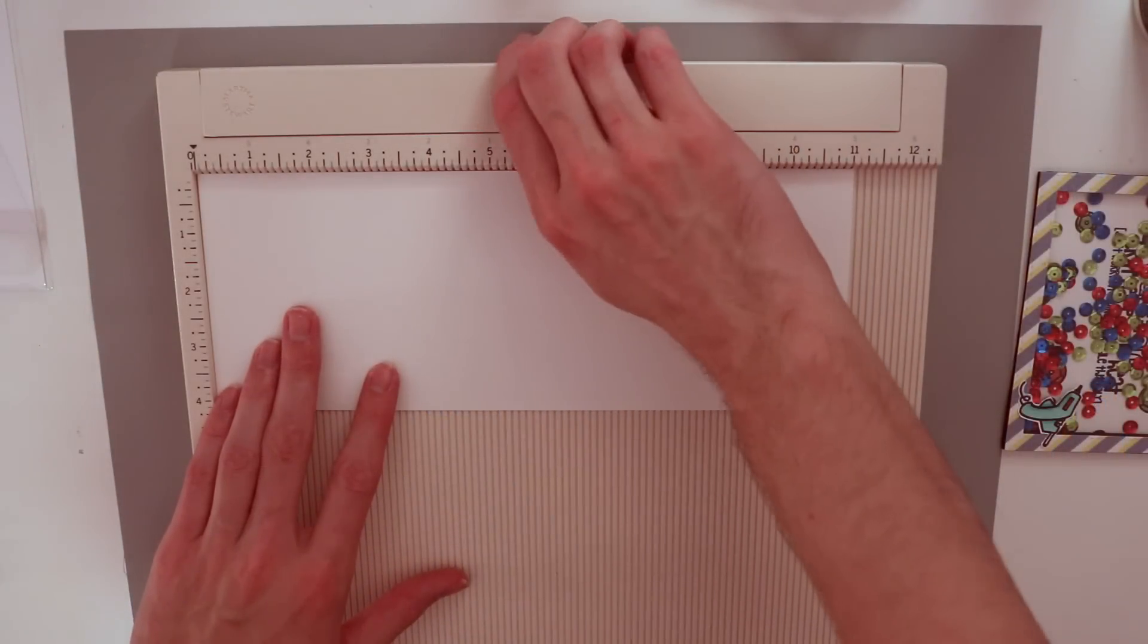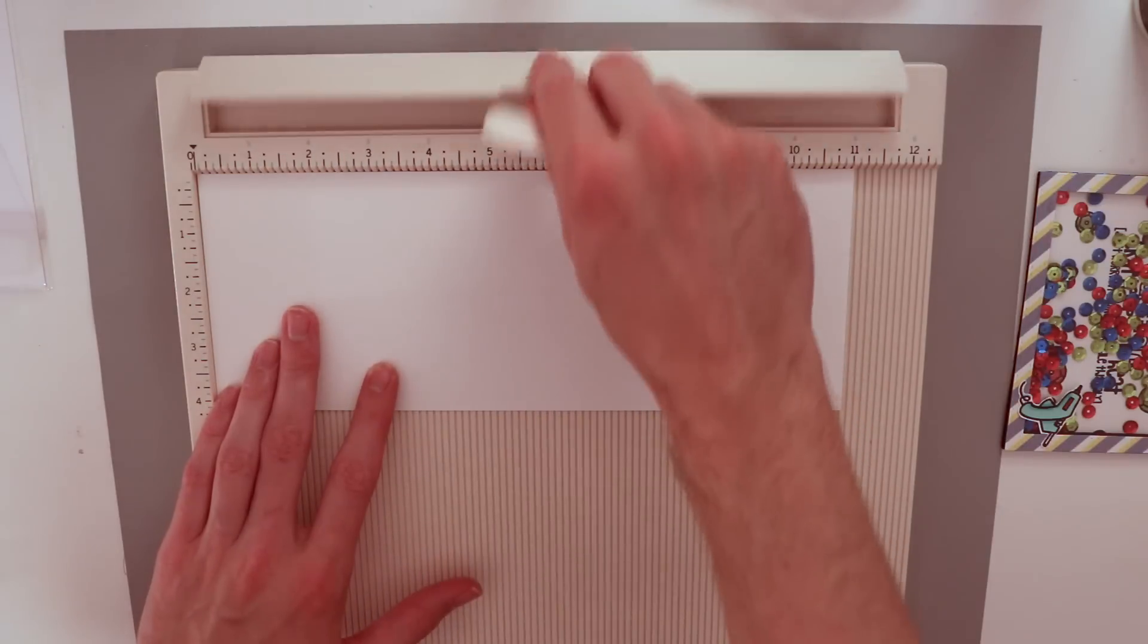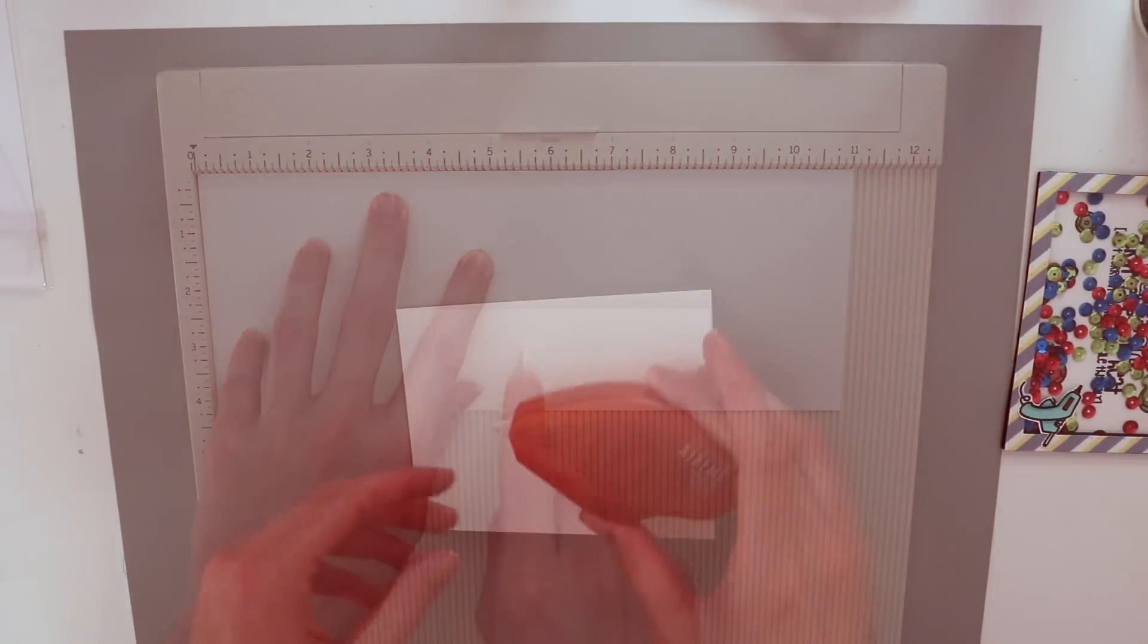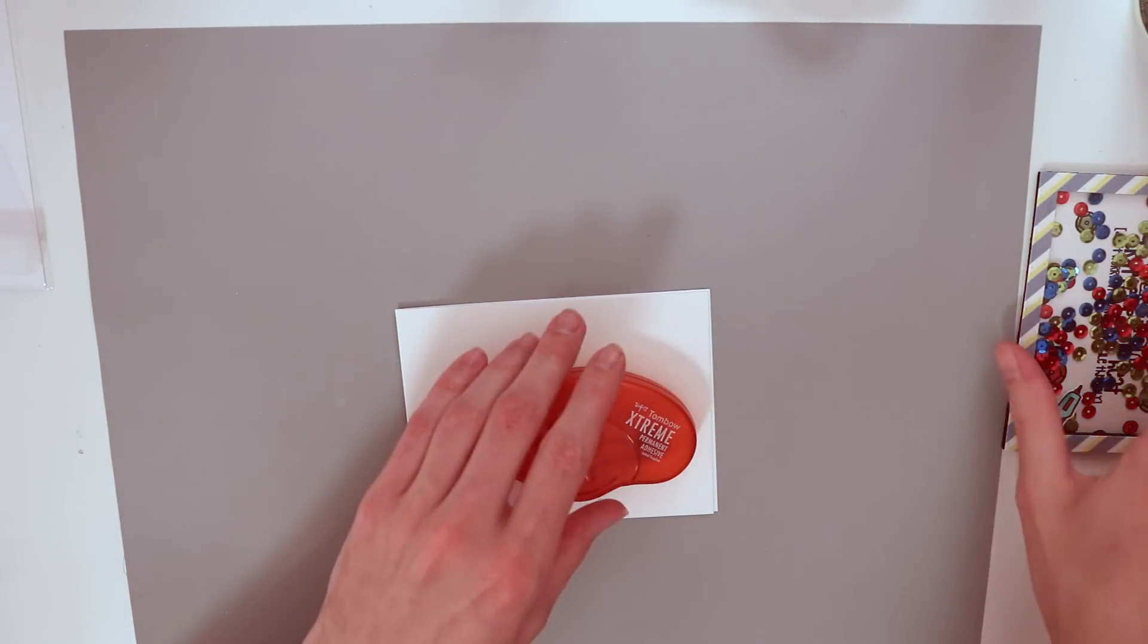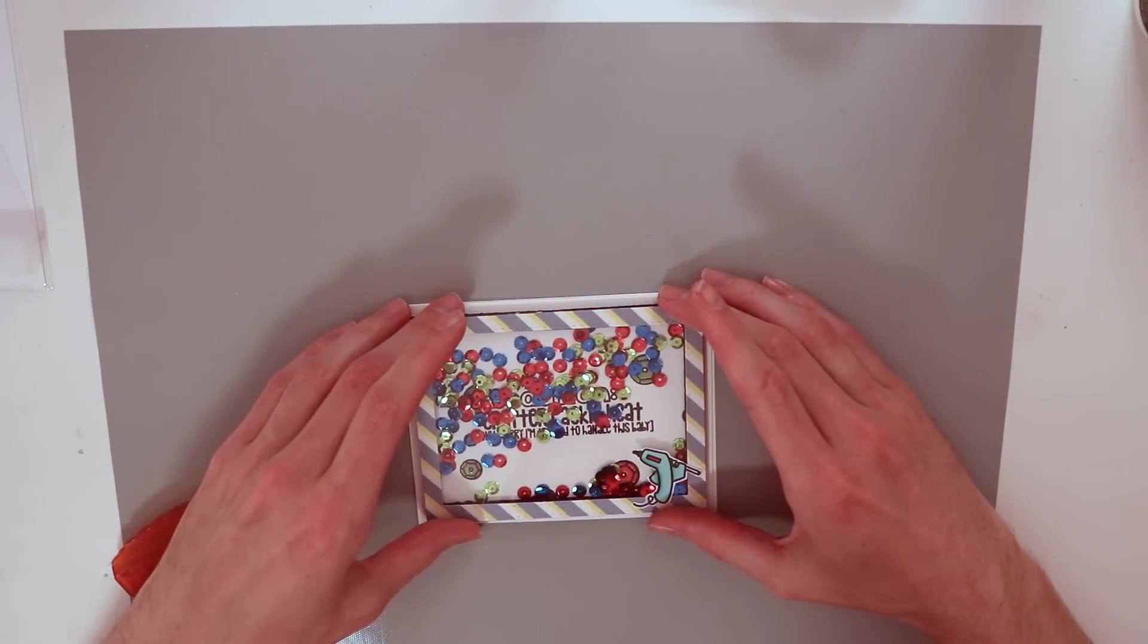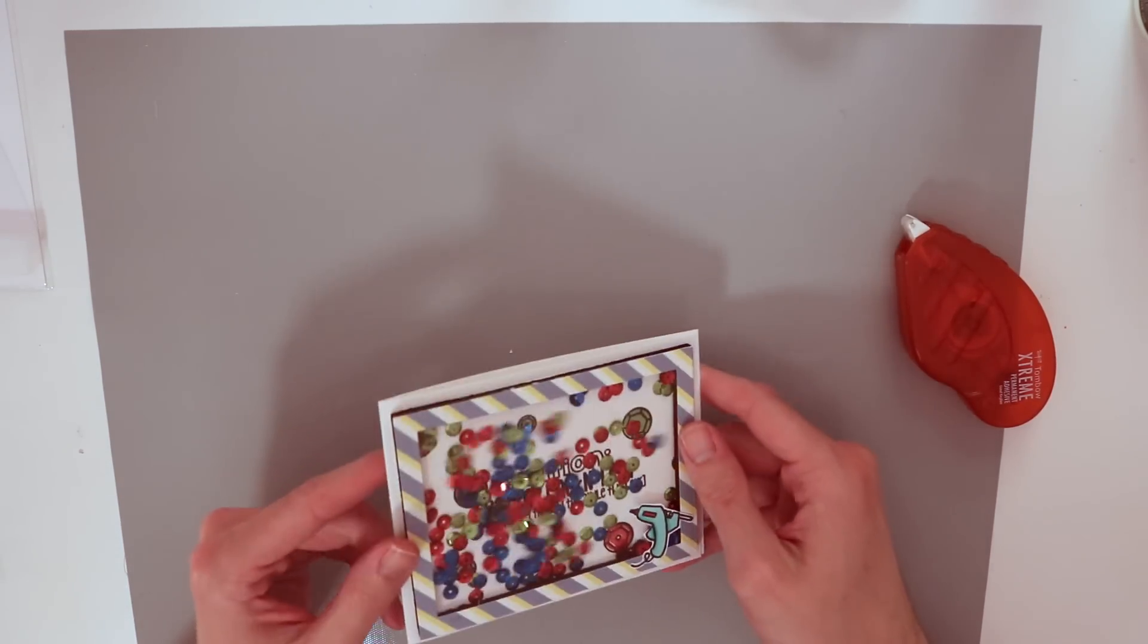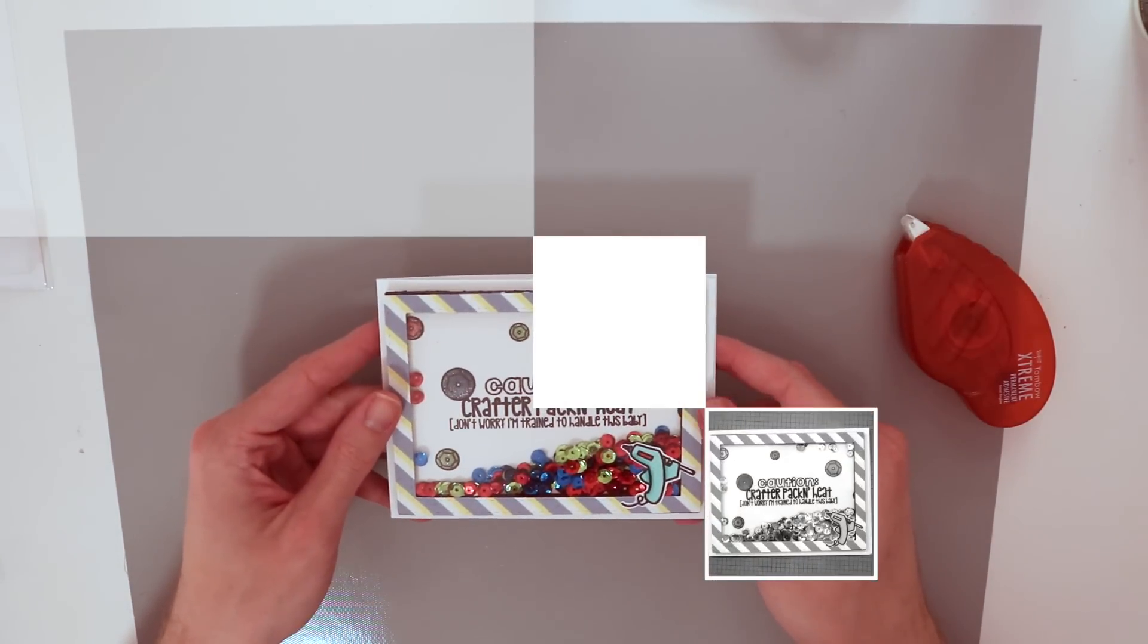I'm going to score this card at four and a quarter by five and a half. Well, that's how big I want the front panel to be. So I'm going to score it here at five and a half. I want to take some of my Tombow extreme adhesive and add this to the front panel of my card because it's going to fit on just like that. There we go guys. It is done after fighting me and not working the way I wanted it to. Finally have a card that I love.